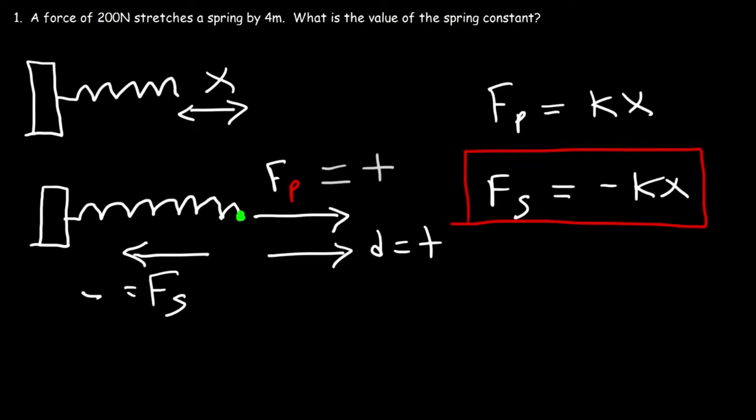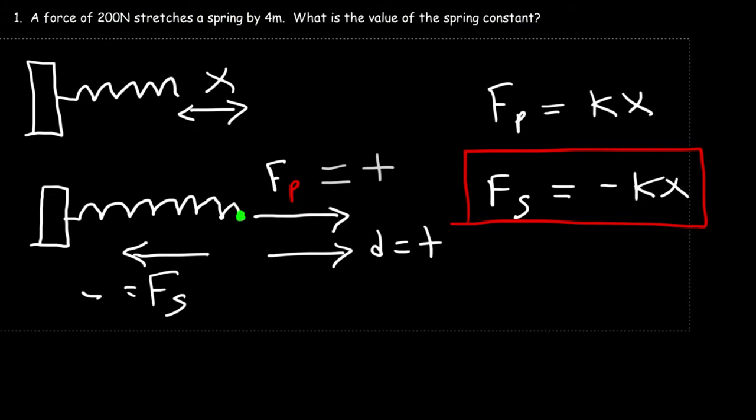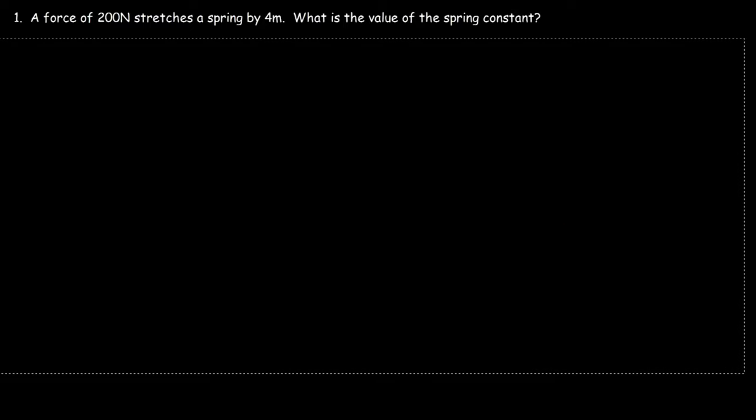The magnitude of the restoring force is proportional to how much you stretch or compress the spring from its natural length. This equation is associated with Hooke's Law. Now that you've received a basic introduction to Hooke's Law, let's focus on some problems. Number one: a force of 200 newtons stretches the spring by 4 meters. What is the value of the spring constant?